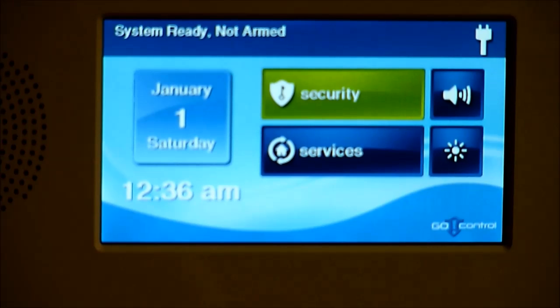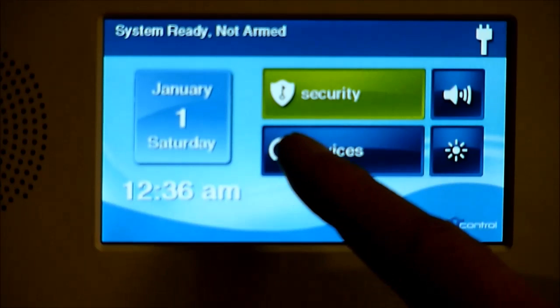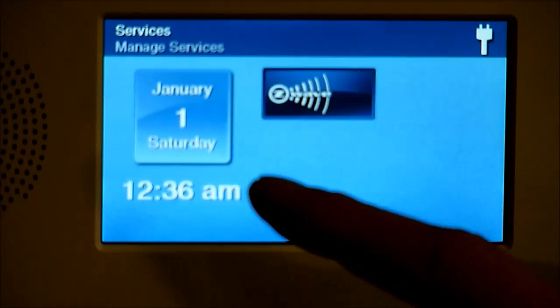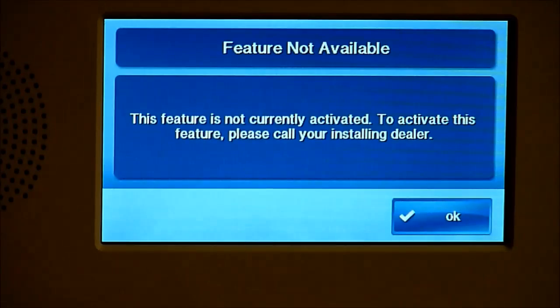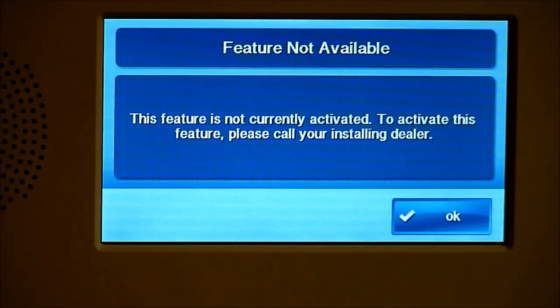To enable the Z-Wave on the 2GIG Go control panel, you'll notice currently the Home Services button when you select it and then select Z-Wave, it'll tell you that the feature is currently disabled.